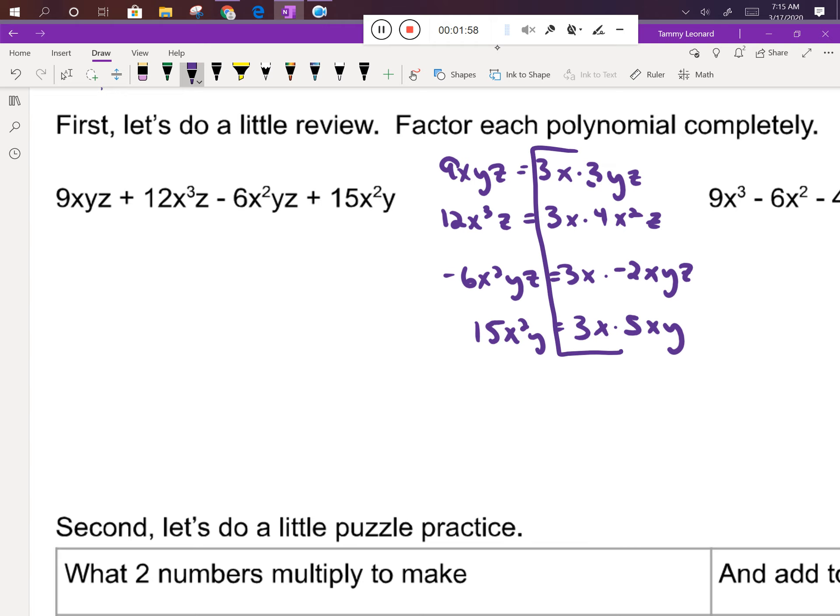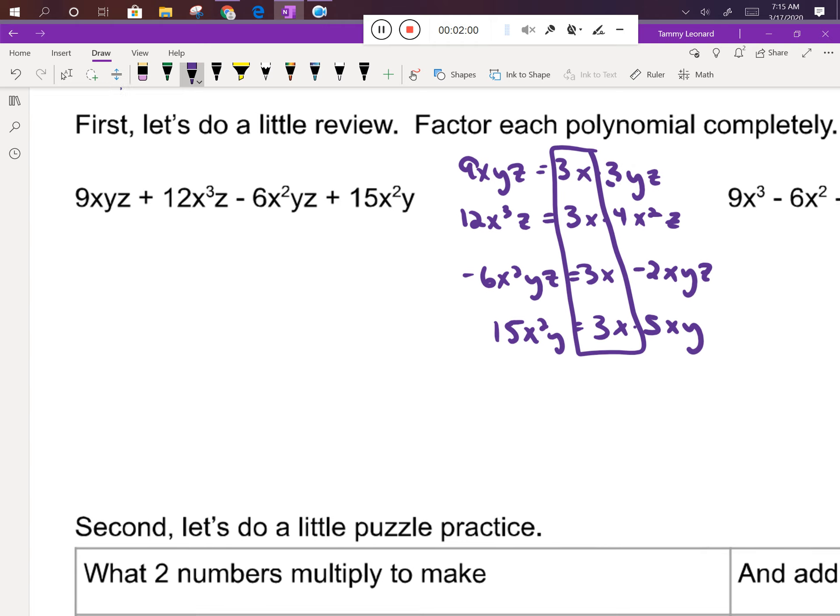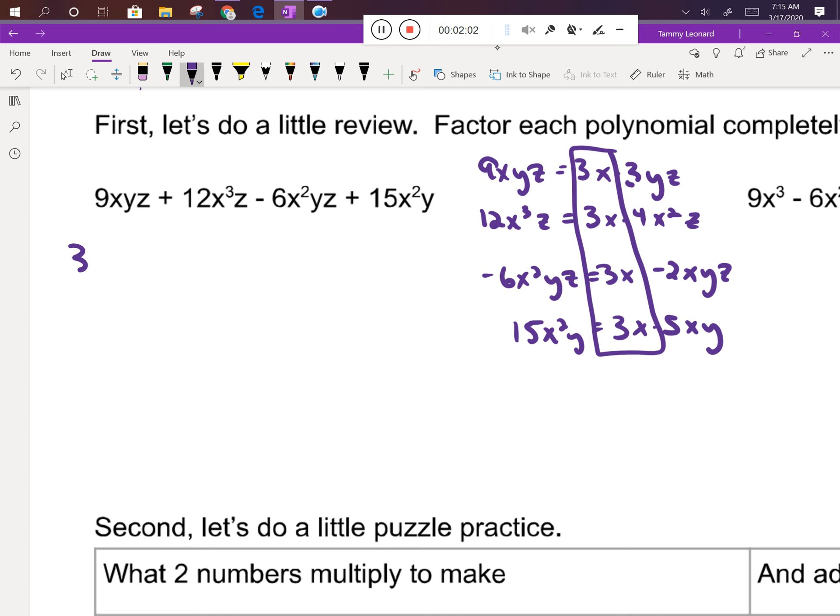So this 3x that we pulled out of everything, that's my GCF. So I'm going to take the GCF of 3x and open a set of parentheses, and inside the parentheses I'm going to have all those additional terms: 3yz + 4x²z - 2xyz + 5xy. And that looks like it's the best I can do.